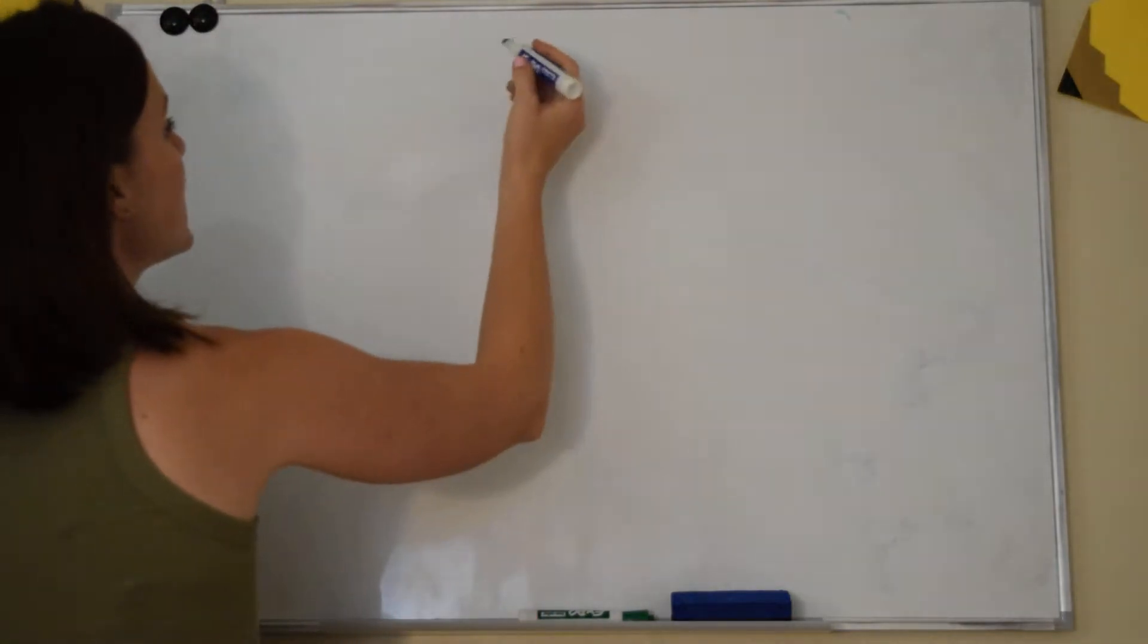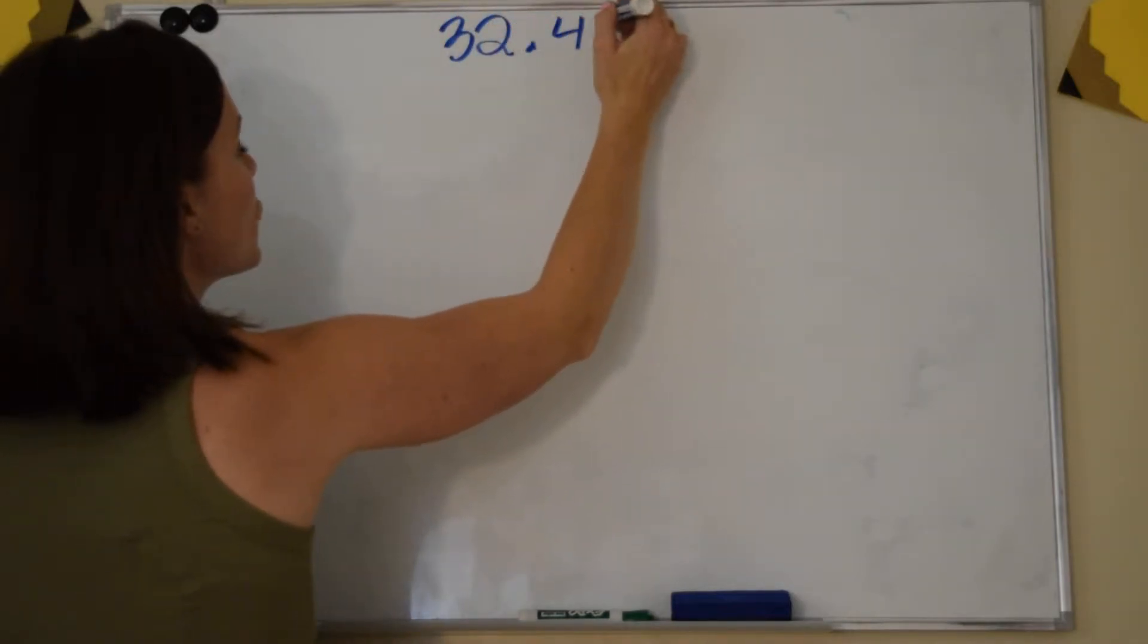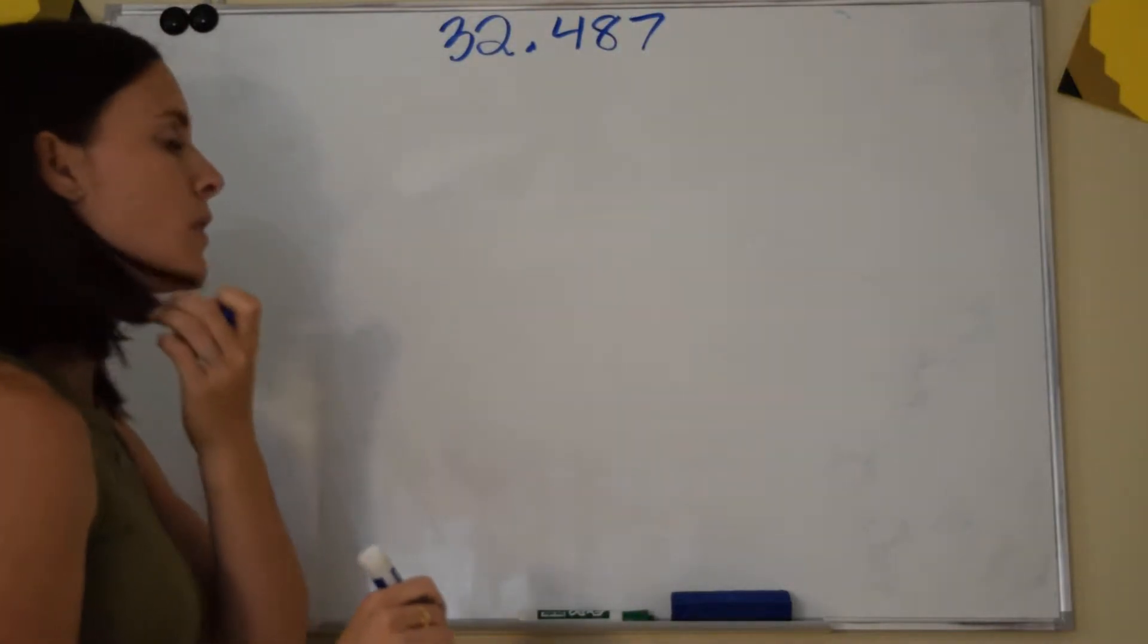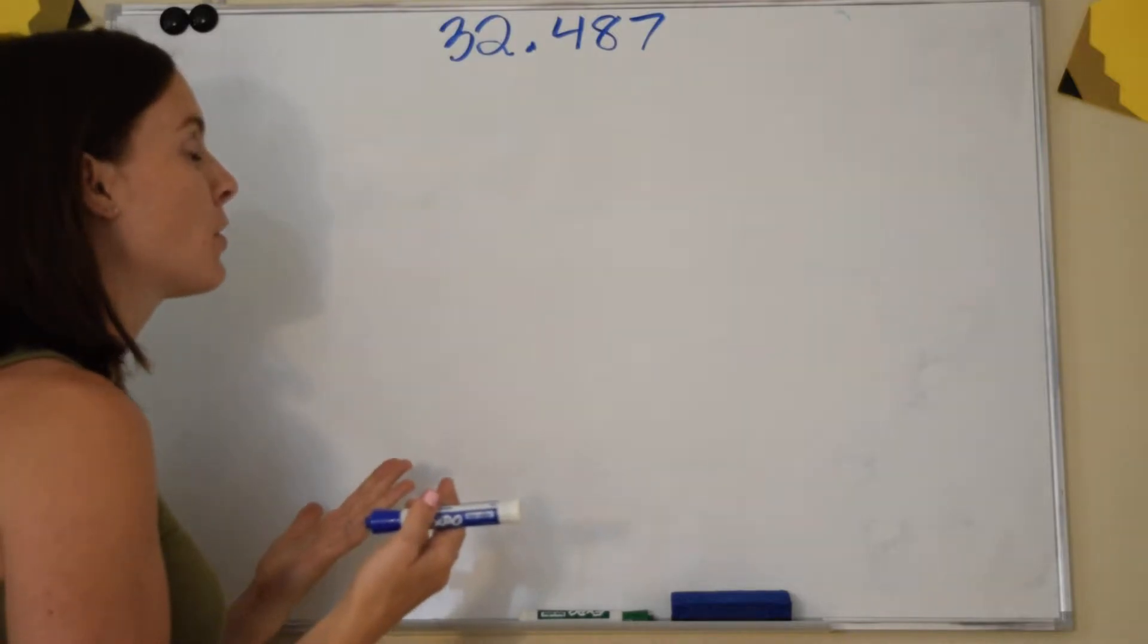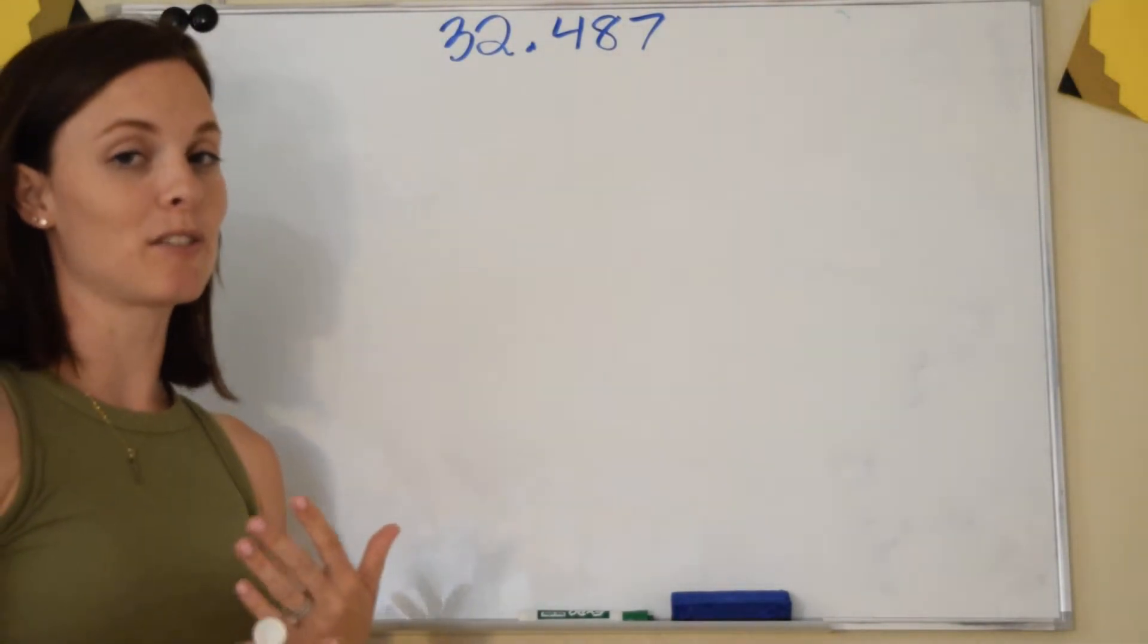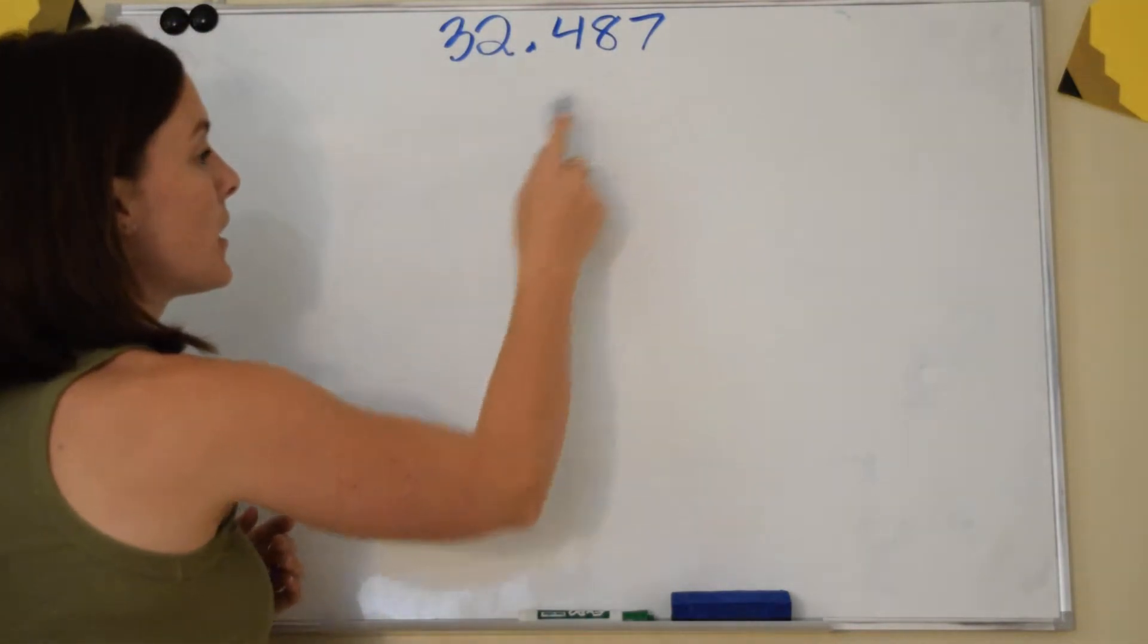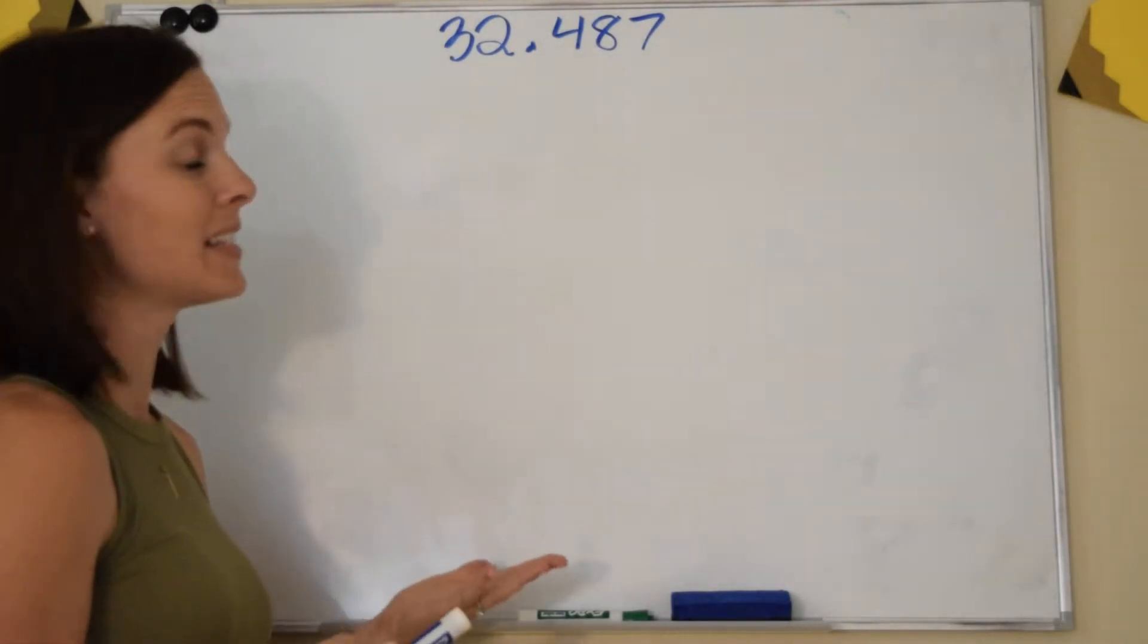So here's what that looks like. Let's say I have the number 32 and 487 thousandths. If you can read this properly, it's important because you understand the place value chart. If you don't, get out your place value chart so that you understand what place each of these numbers is, or where they're sitting.